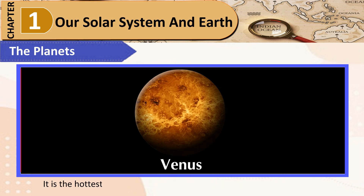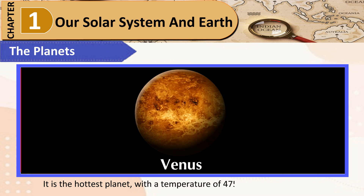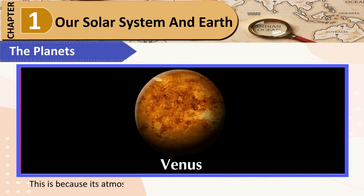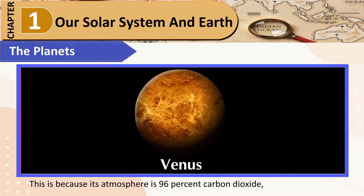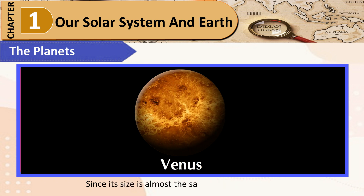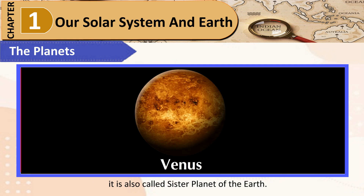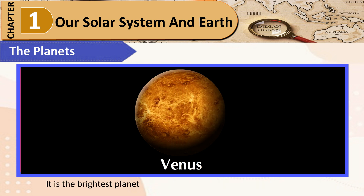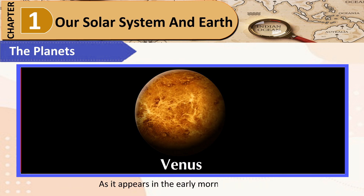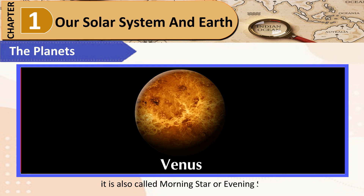Venus: It is the hottest planet, with a temperature of 475 degrees Celsius even during the night. This is because its atmosphere is 96% carbon dioxide, a gas that traps heat. Since its size is almost the same as that of the Earth, it is also called the sister planet of the Earth. It is the brightest planet in the night sky and easy to spot from Earth. As it appears in the early morning or evening, it is also called the morning star or evening star.